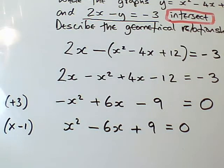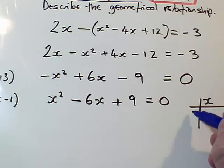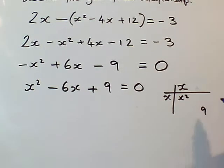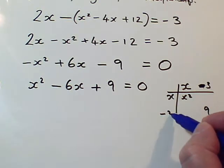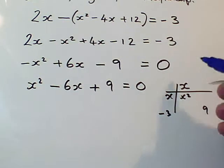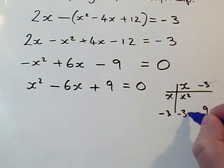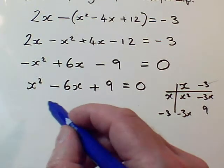This one factorizes beautifully. Let's do the grid: x and x to make x². I want a 9 down here, and it turns out that if I put a -3 and a -3, then -3x here and -3x there gives me this -6x. So this factorizes as (x - 3) times another (x - 3) equals 0.